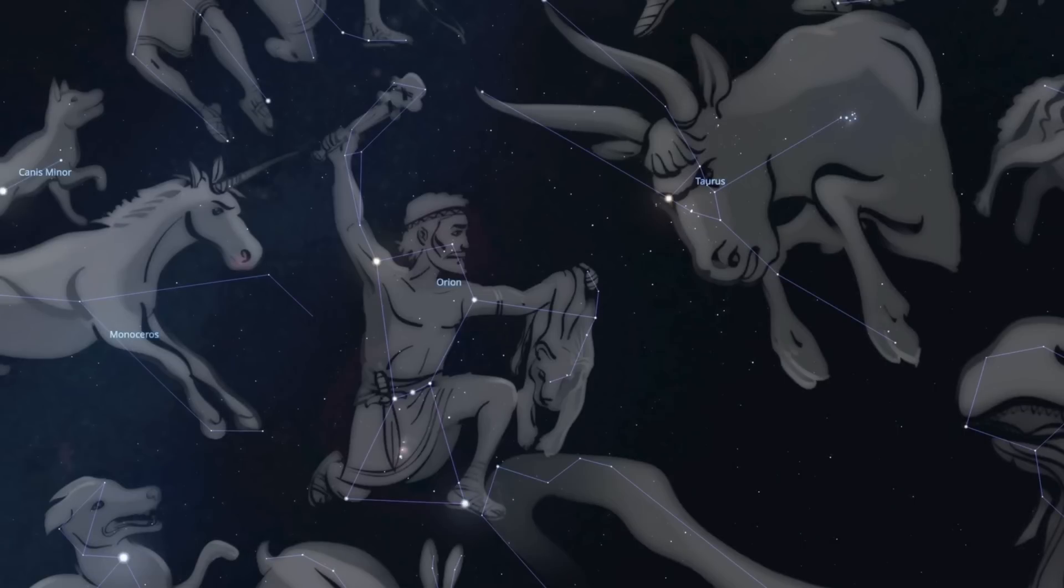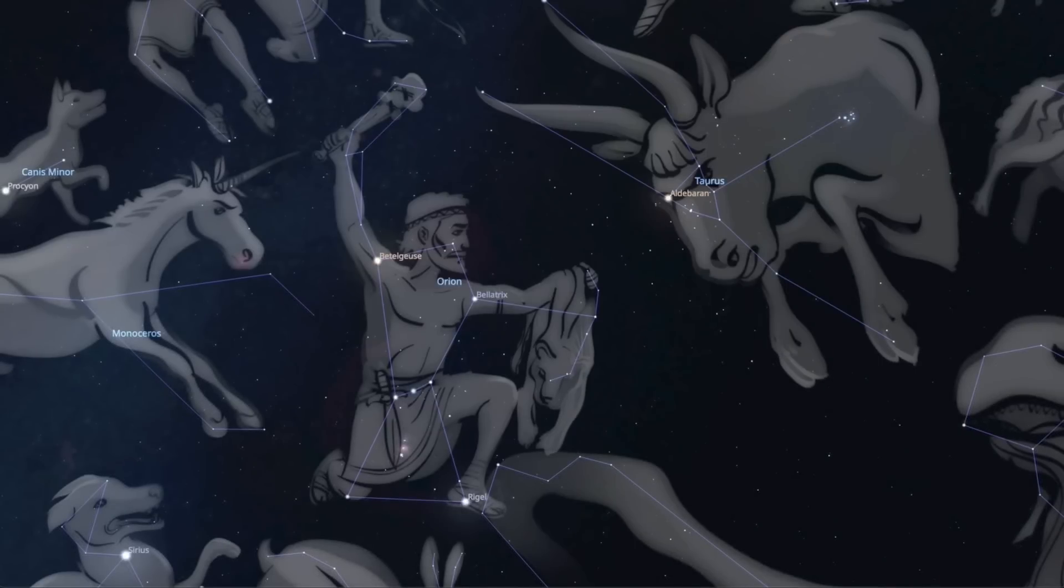To help us understand the ancient stories better, I've traced the constellations with lines that denote the most prominent asterisms. This connect-the-dots game helps us better see the patterns. I've also added the constellations' names.